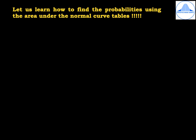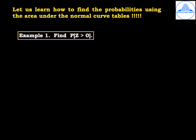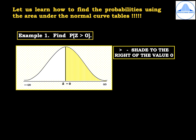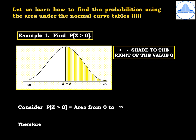Example 1: find probability of z greater than 0. Draw the standard normal curve where the center line is z equal to 0 and mark the extremities as minus infinity and infinity. Because the sign is greater than, shade to the right of the value 0 — shaded in yellow from 0 to infinity. The area from the center line to infinity is 0.5. Therefore probability of z greater than 0 is 0.5.